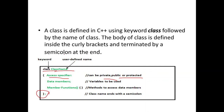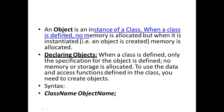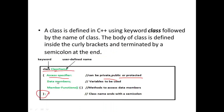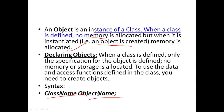An object is an instance of a class. When a class is defined, no memory is allocated, but when an object is created, the memory is allocated. To declare an object, after the class keyword we specify the class name, followed by the object name — that is how we declare an object.